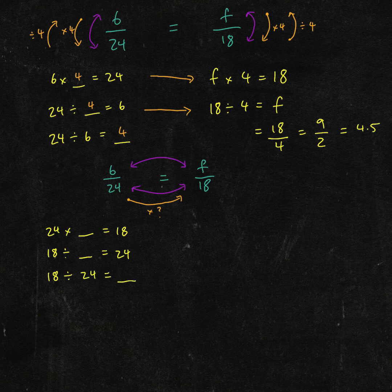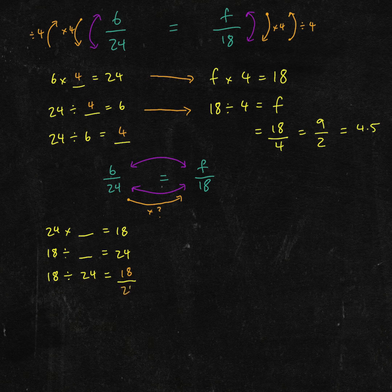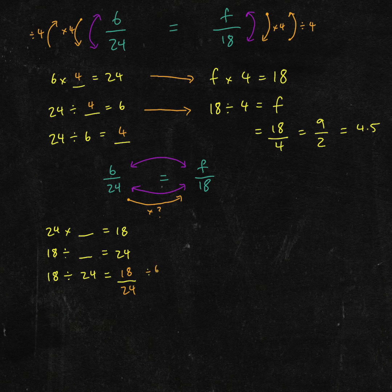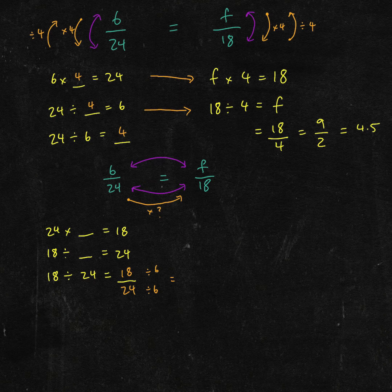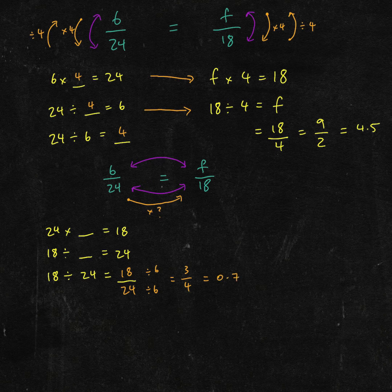Which can be written like 18 over 24. The common factor between these numbers is 6. So to simplify, we divide each one by 6, and that will give us 3 over 4, which in decimal form is 0.75.